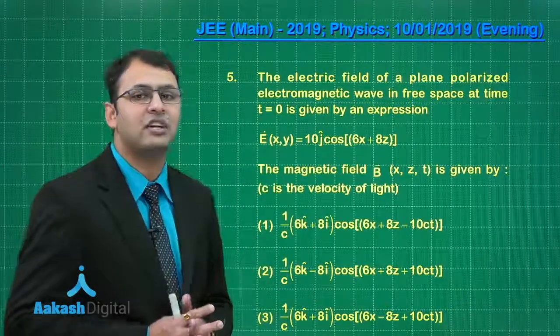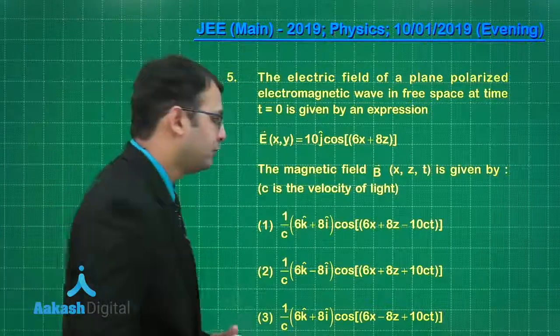The very first thing is the electric field is along the y axis. That means the magnetic field should be somewhere in xz plane. Let's start with the solution.